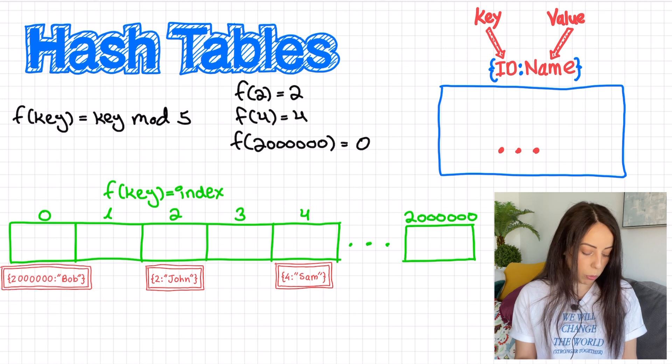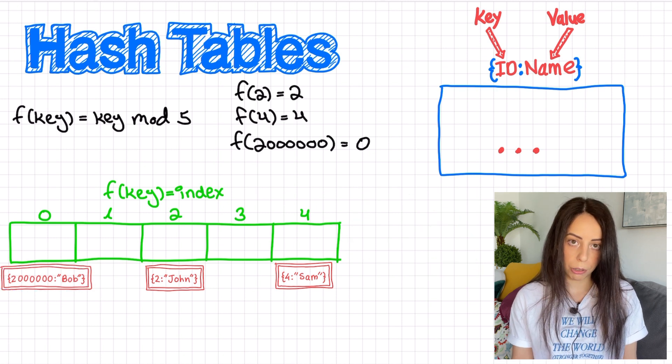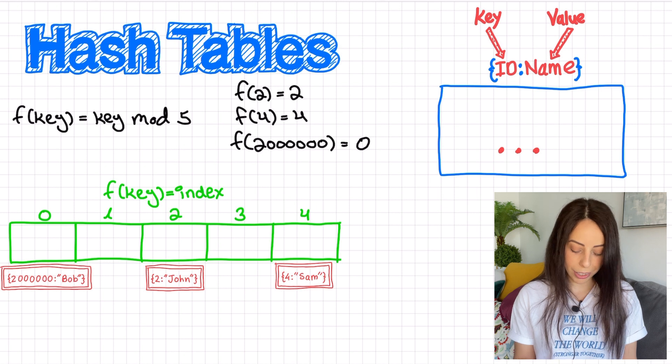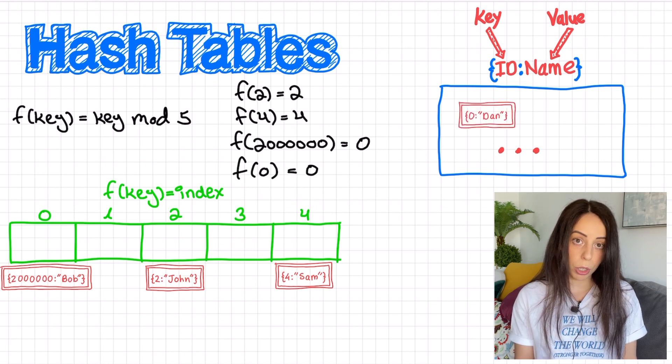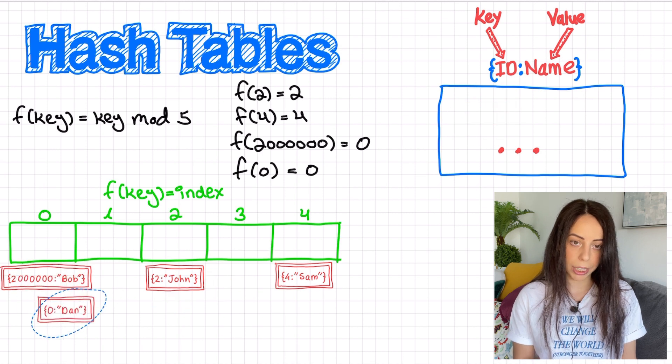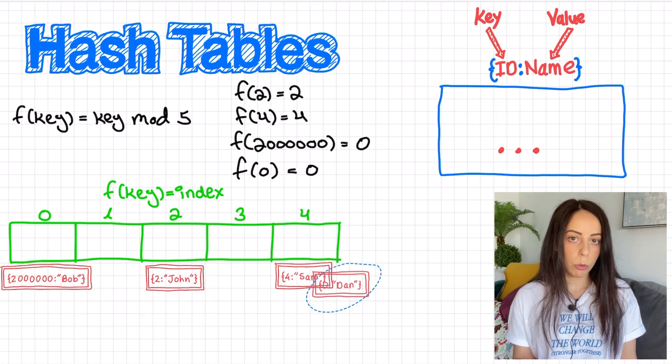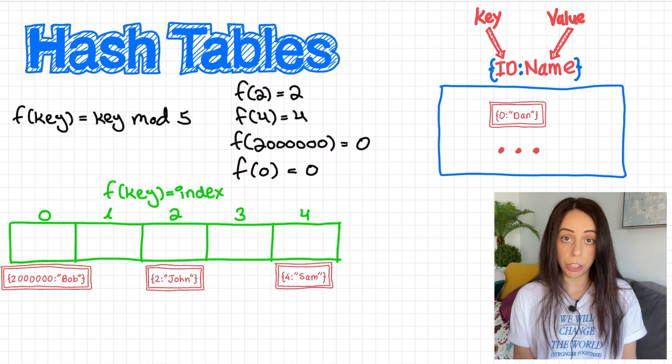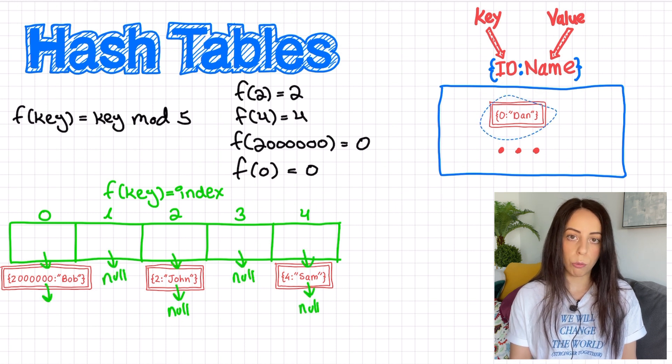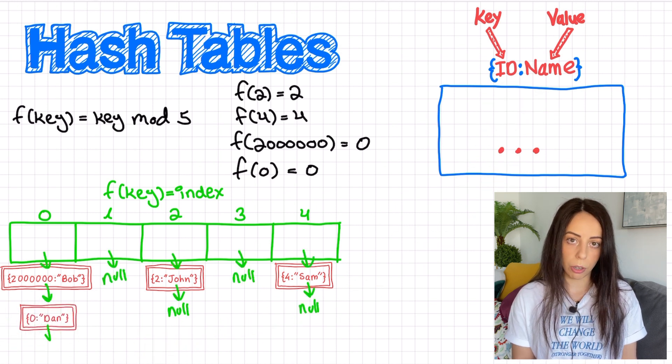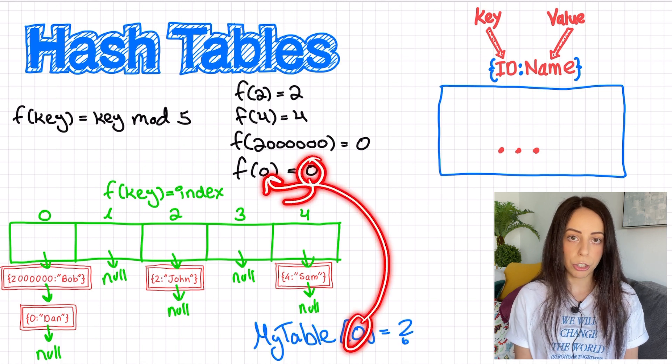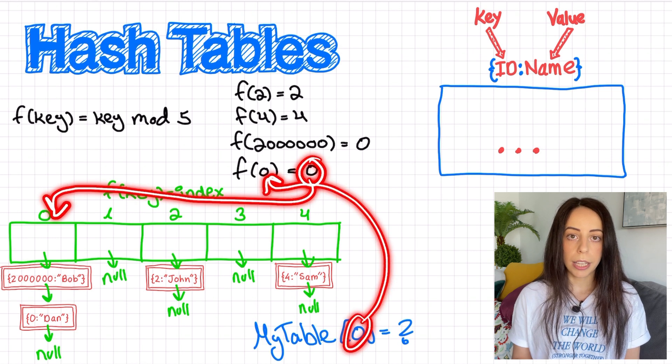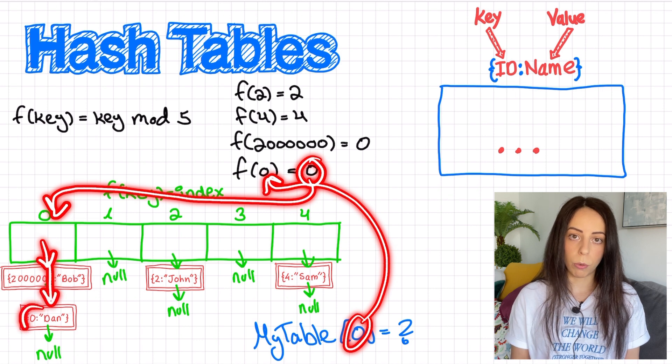And now the array can go back to be of size 5. So we fixed one problem, but now what if I also add this element? The remainder of dividing 0 by 5 is 0, and we already have an element at index 0, right? That is called a collision. And the way we usually deal with collisions is for each cell, we keep a list of all the elements that map to this cell. And then when we want to retrieve an element, we would first get to the right location using the hash function, and then we would iterate the list to find the right key.